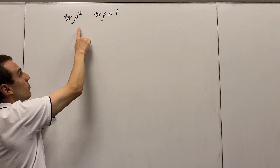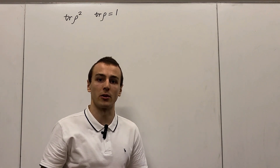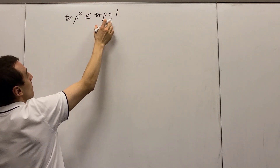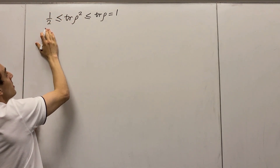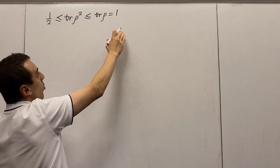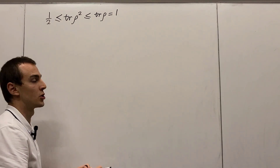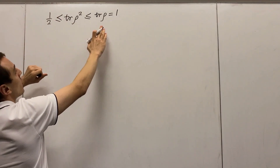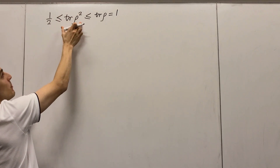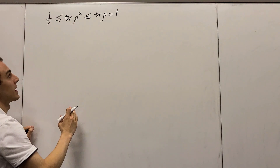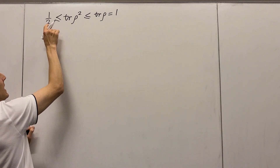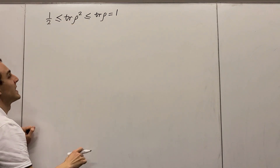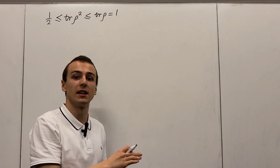These quantities are sometimes equal to each other, but often are not. In general, the purity is sandwiched between one half and one — the lower bound is one half and the upper bound is one. When is it equal to one? That case is the pure state. If we're not dealing with a pure state, the trace of rho squared is somewhere between one half and one. At the lower end, when trace of rho squared equals one half, that is known as the maximally mixed state.